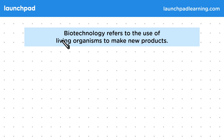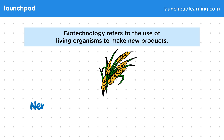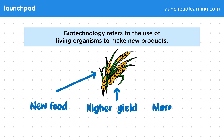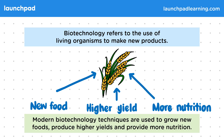Biotechnology refers to the use of living organisms to make new products. Golden rice is an example of a new food we have made that has a higher yield and provides more nutrition. Modern biotechnology techniques are used to grow new foods, produce higher yields and provide more nutrition. For the exam you should be able to describe and explain some possible biotechnical and agricultural solutions, including genetic modification, to the demands of the growing human population.